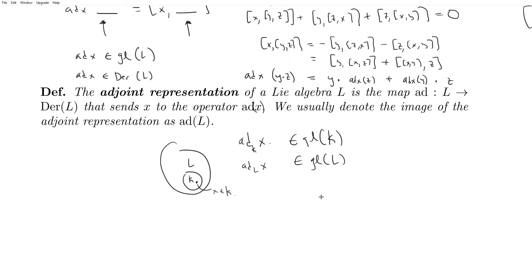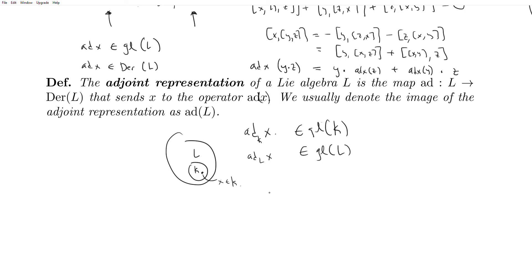And the reason this matters is because, for example, if X is an element of the diagonal matrices D_N(F), then ad(X) is equal to 0 inside here, so ad sub D_N(F). But if you view it, this is also contained in the general linear algebra, and in general, it's not equal to 0. So ad(X) as an element of GL(N, F) is not equal to 0. Because we would call the diagonal matrices abelian.